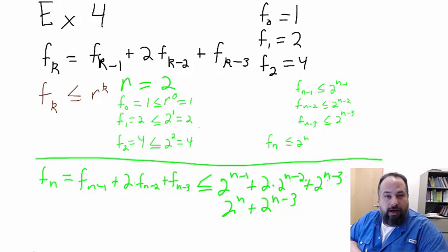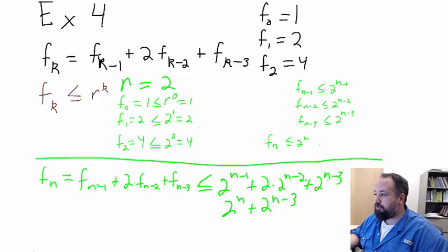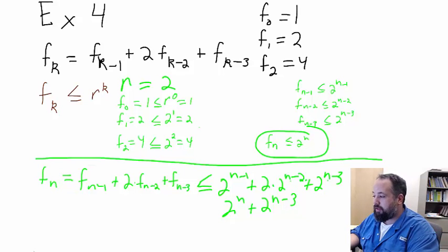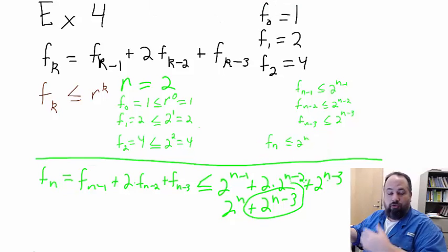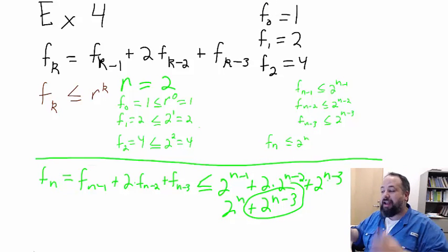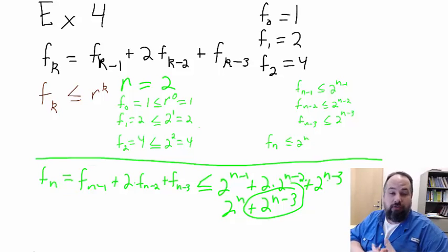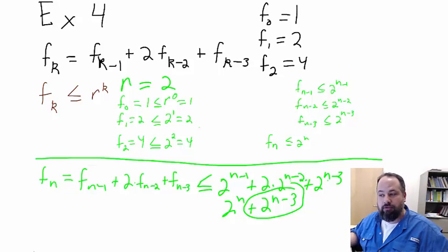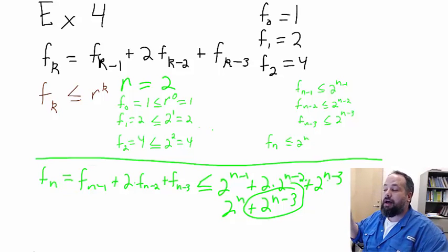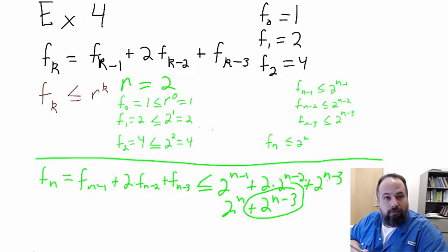But that's not our hypothesis. That's not what we're trying to prove. We're trying to prove that f of n is less than or equal to 2 to the n. But then we end up with this extra bit, which cannot be equal to 2 to the n. 2 to the n plus 2 to the n minus 3 can never be equal to 2 to the n. Therefore, we cannot prove our inductive step.